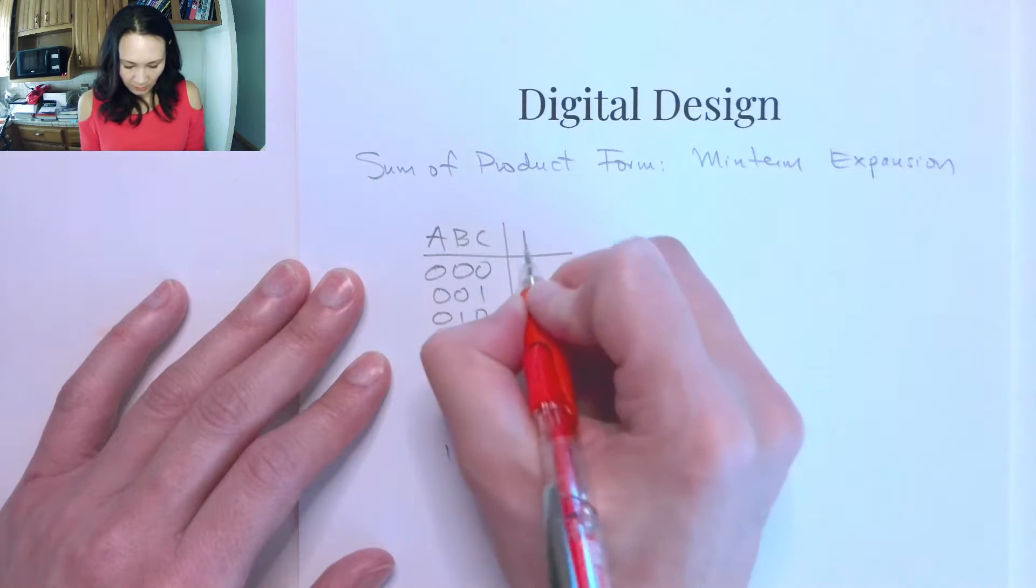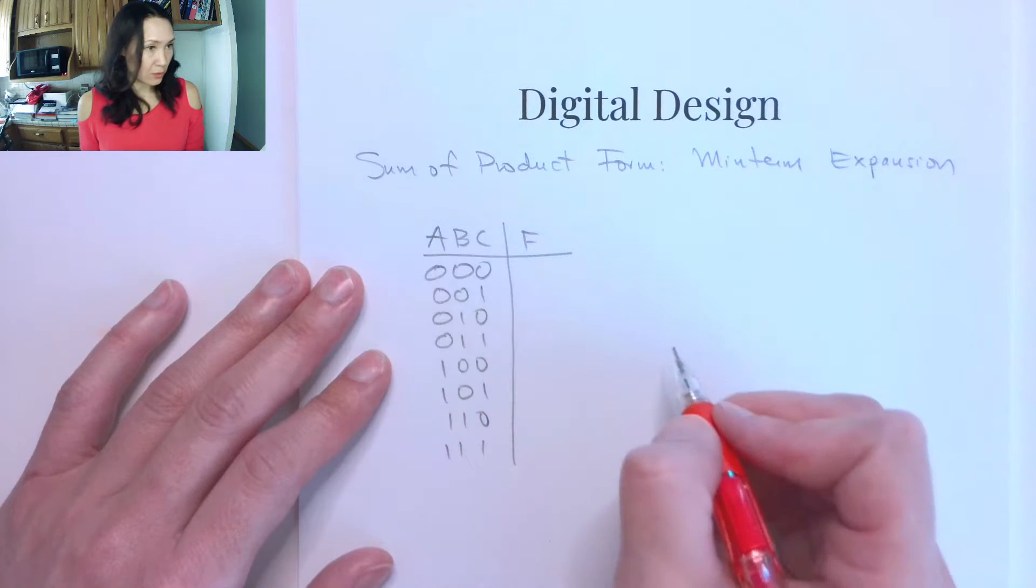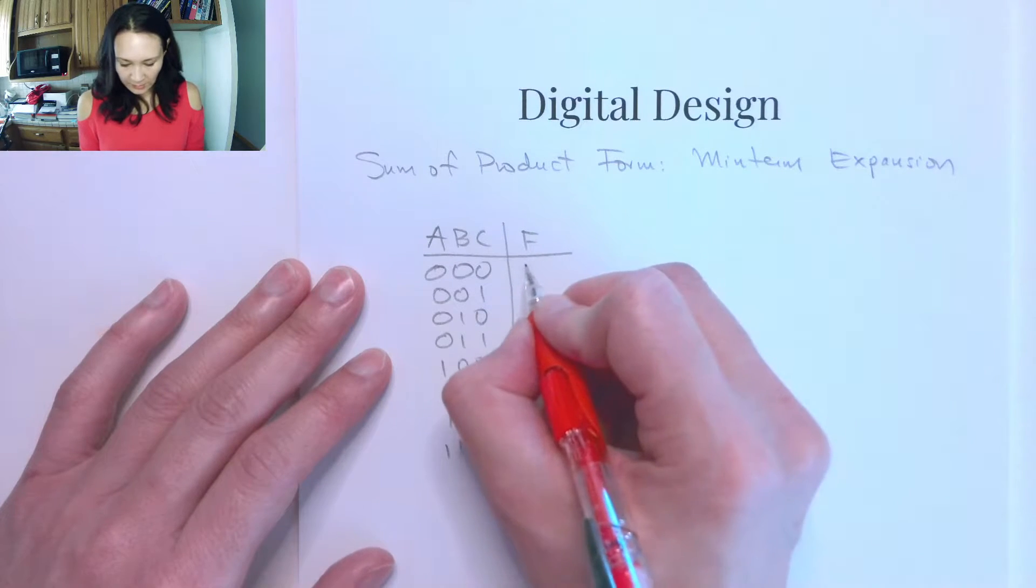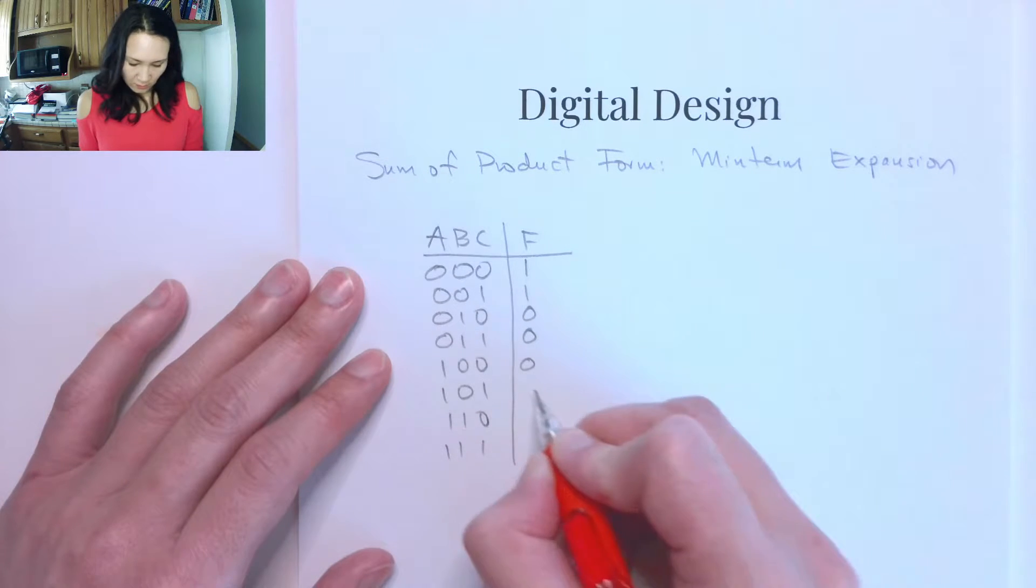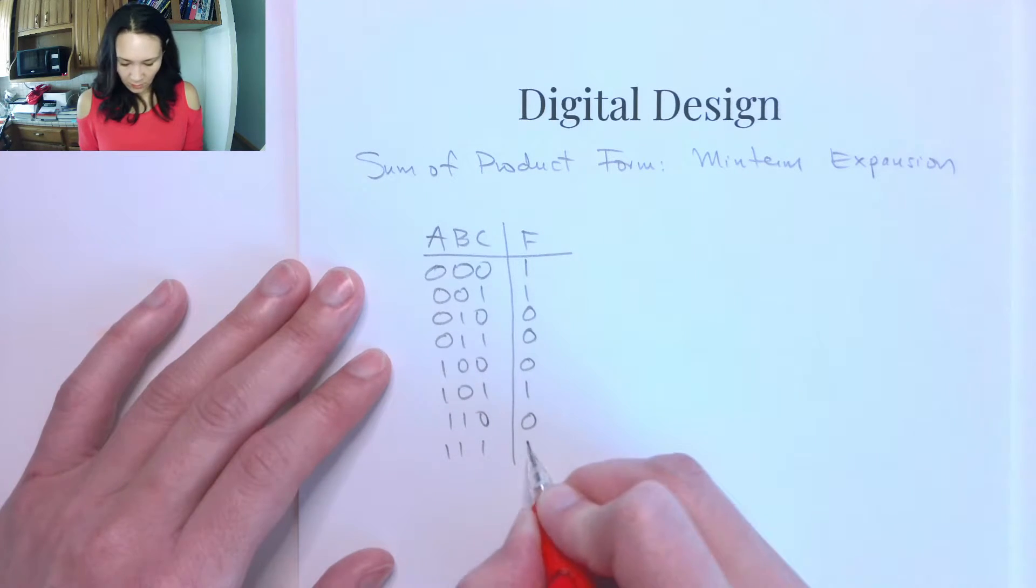So if we were given a truth table where our outputs f were 1 here, here, 0 here, here, a 1 here, a 0 here, and a 1 here.